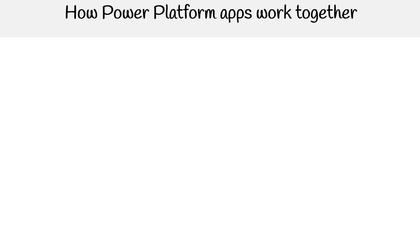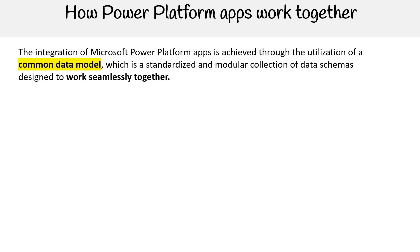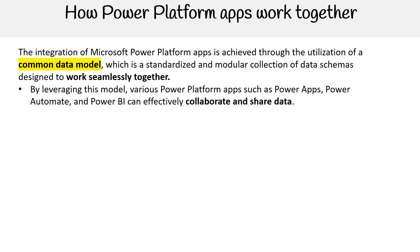We've briefly gone over the main Power Platform products and their key features, but we haven't really touched on how Power Platform apps can work together. The integration of Microsoft Power Platform apps is achieved through the utilization of a common data model, which is a standardized and modular collection of data schemas designed to work seamlessly together. By leveraging this model, various Power Platform apps such as Power Apps, Power Automate, and Power BI can effectively collaborate and share data.